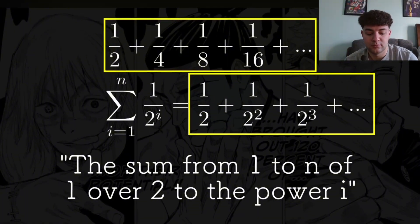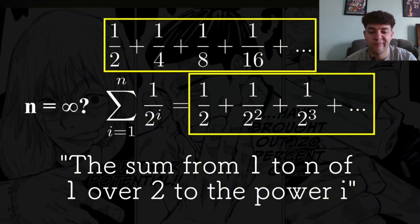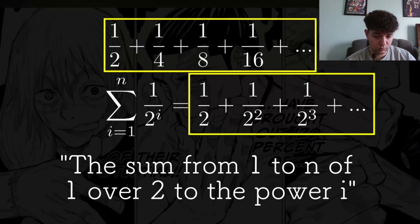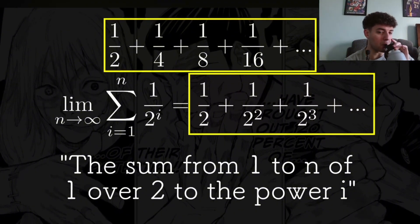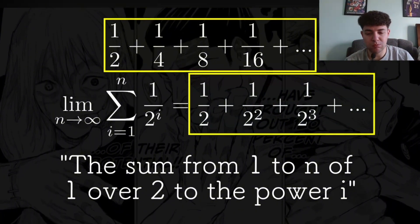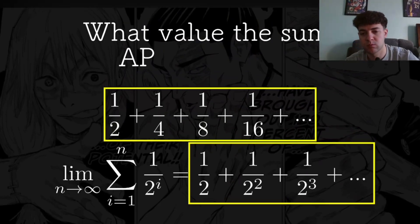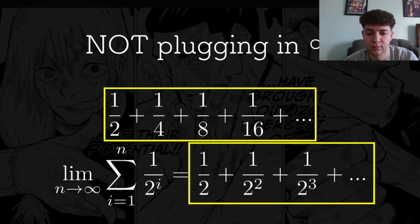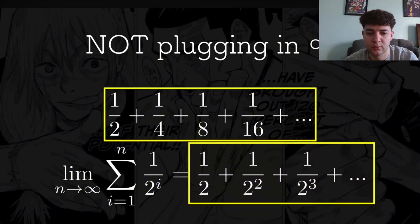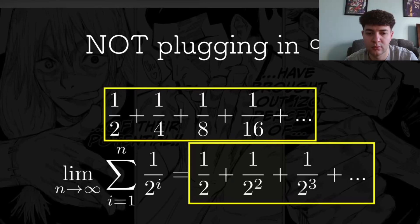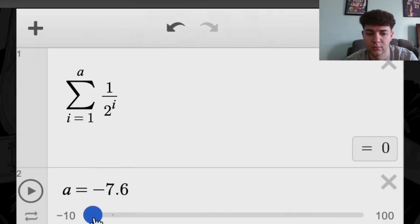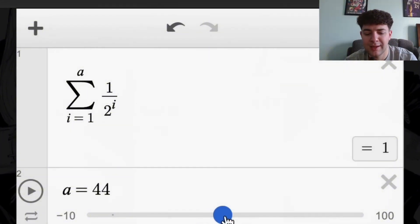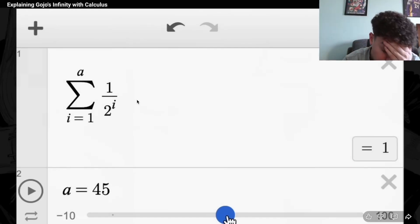So what if we let n be infinity? That's impossible in the real world, but we have a workaround. Instead of actually plugging in infinity, we take the limit as n approaches infinity of this sum. We just want to see what value our sum approaches as n gets larger and larger. We're not actually plugging in infinity — it's just a clever workaround so we don't have to deal with it. If you plug a really large number in for n on a calculator, you'll see that the value approaches 1, which is what we expect.